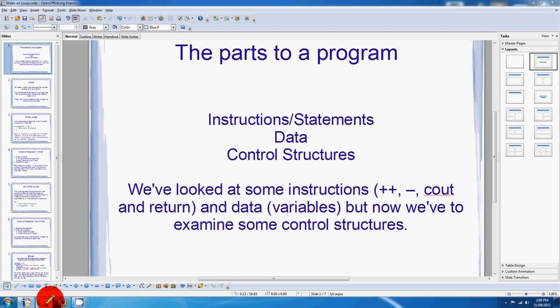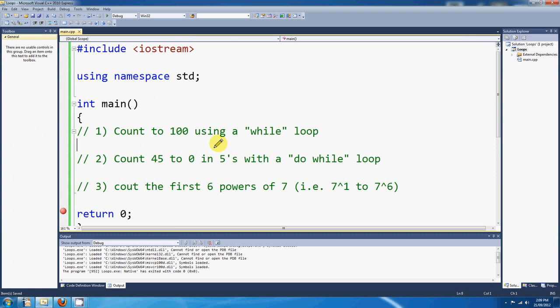Okay, so that's the break keyword, that's while loops and do while loops, but if we come over to C++, I've got some puzzles. Okay, three little questions here. Count to 100 using a while loop. Count from 45 to zero in fives using a do while loop, and count the first six powers of seven, so from seven to the power of one all the way to seven to the power of six. I'm going to do these in a second, but it's probably going to be pretty good. If you want to have a go yourself, just pause the video. Okay, that's enough time. I hope you paused it and had a go, but it's up to you. This is just one way to do it. There's a billion ways to do any one of these things, but this is one way to do it.